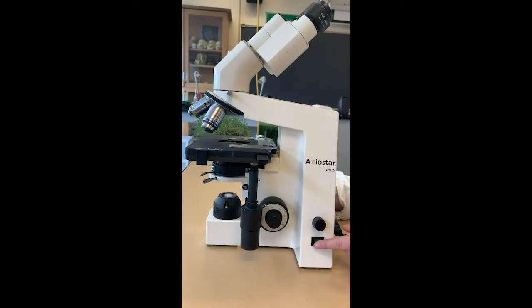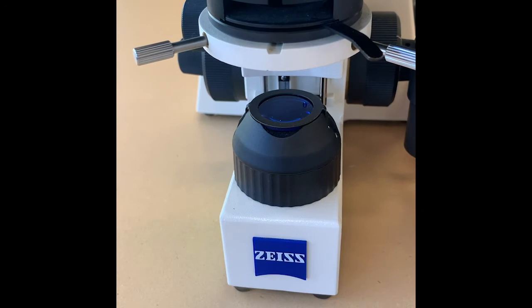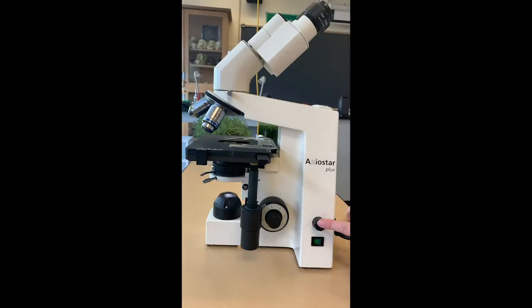To turn the microscope on, we have an on-off switch. When that's turned on, a light bulb goes on in the field diaphragm here. Right above the on-off switch, we have an adjustment knob. It's basically a dimmer switch for the light bulb.